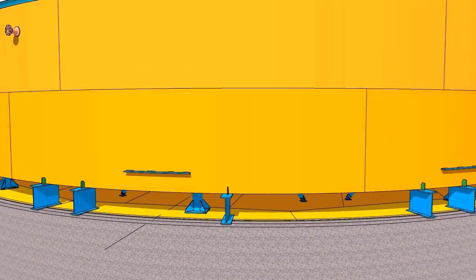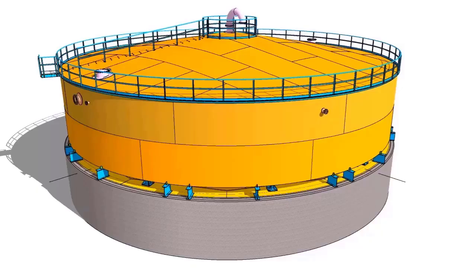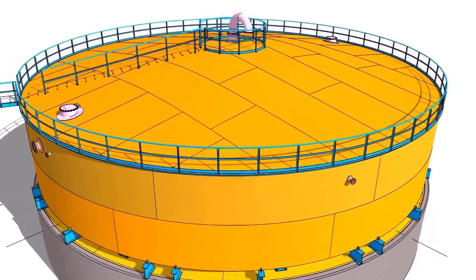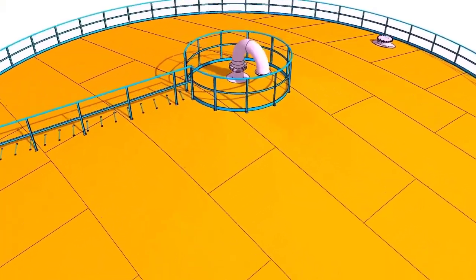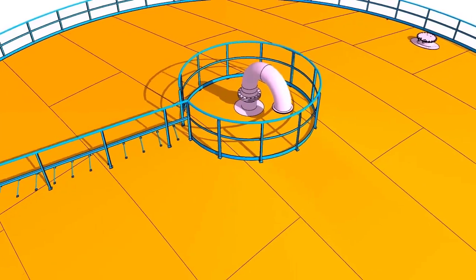Loosen the chain block and shift the hook and moon plate to the second shell. Install the roof plate, nozzles, handrails, etc. Complete the welding.